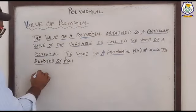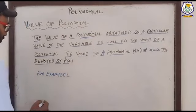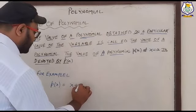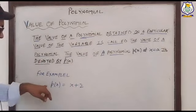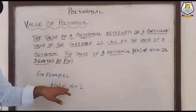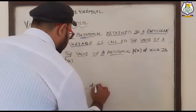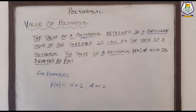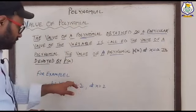For example, we have polynomial p(x) equal to x plus two. This is a linear polynomial because its degree is one, and it is also a binomial because it has two terms. Now the simple step is: this polynomial p(x) = x + 2 — you can see x in this polynomial.